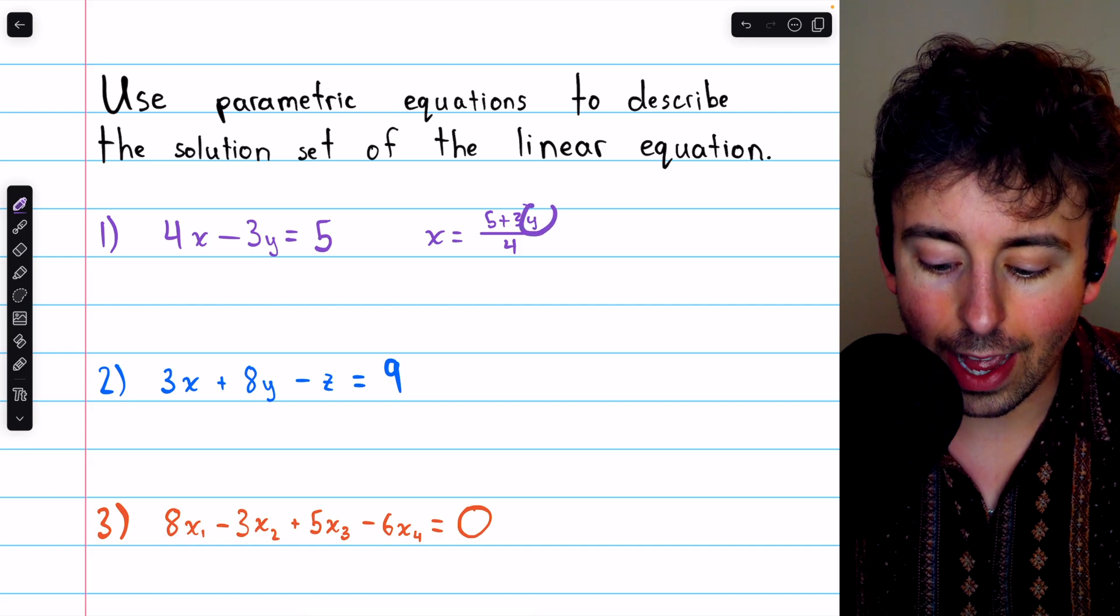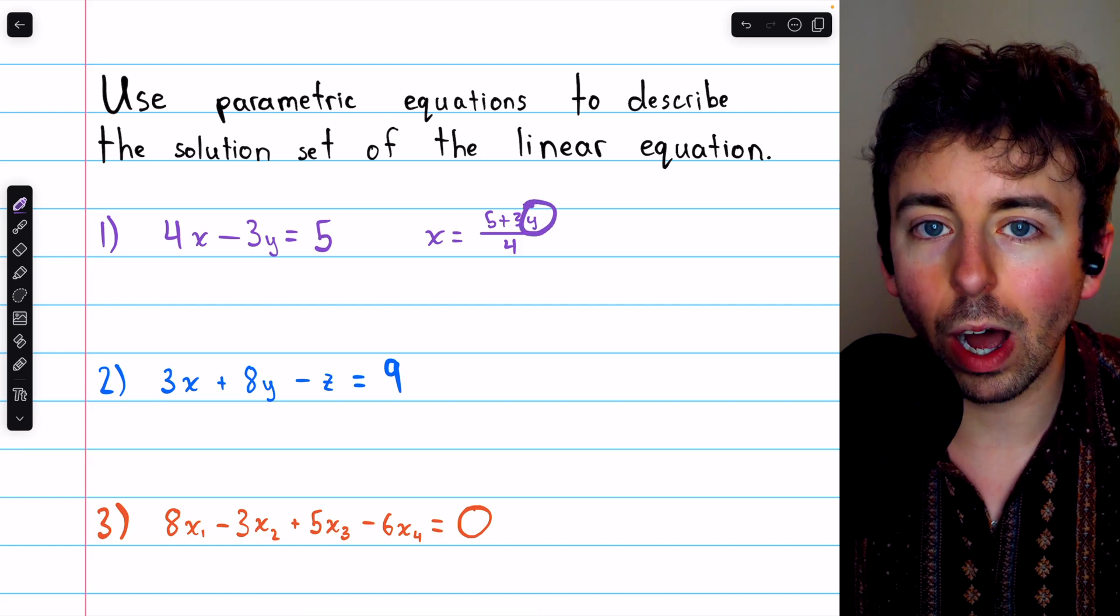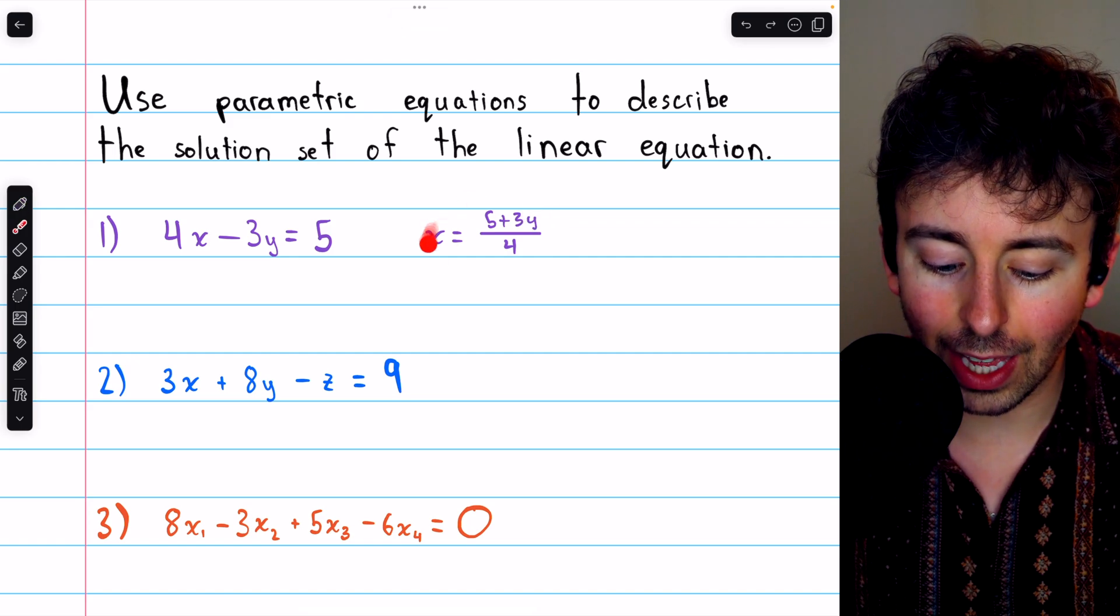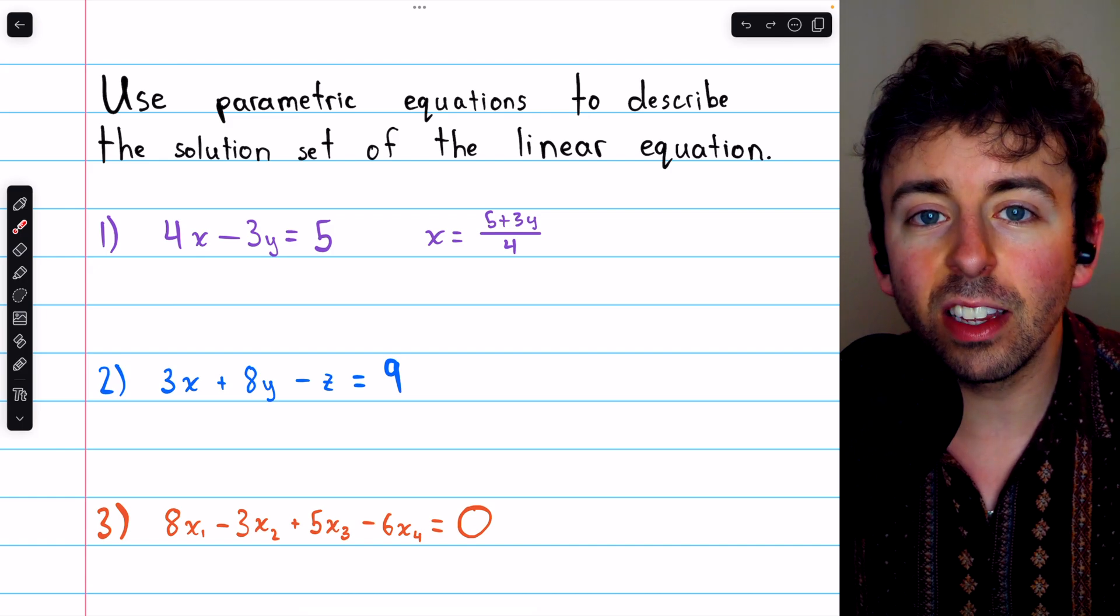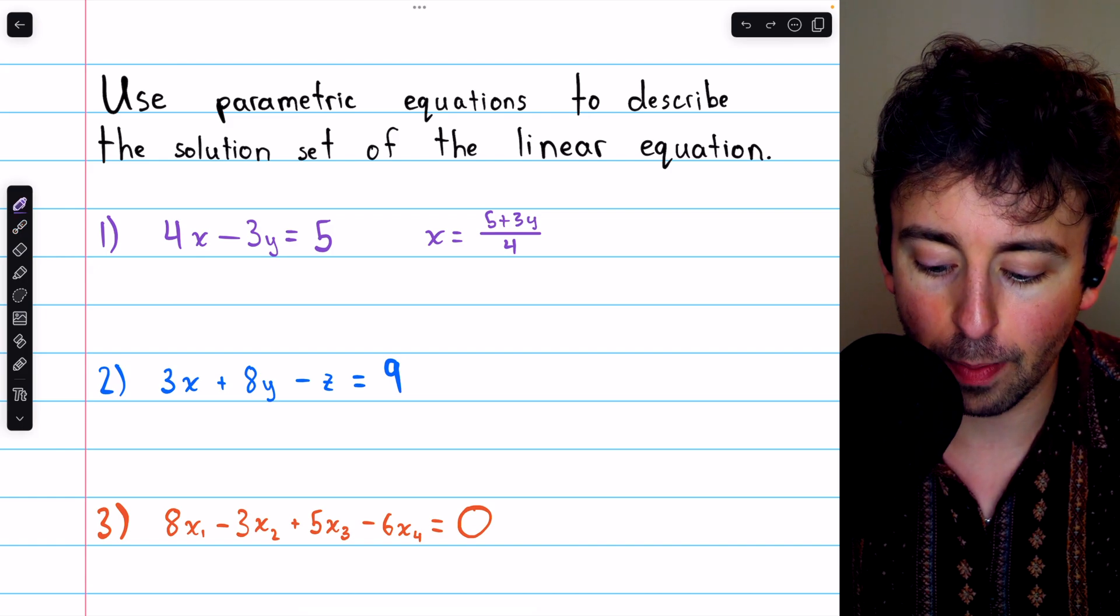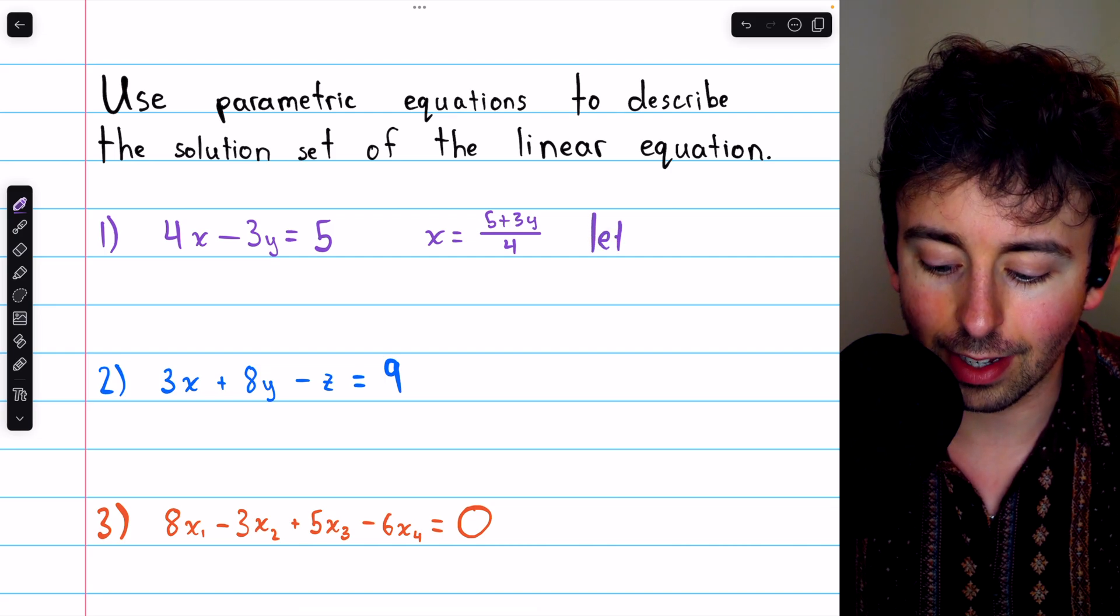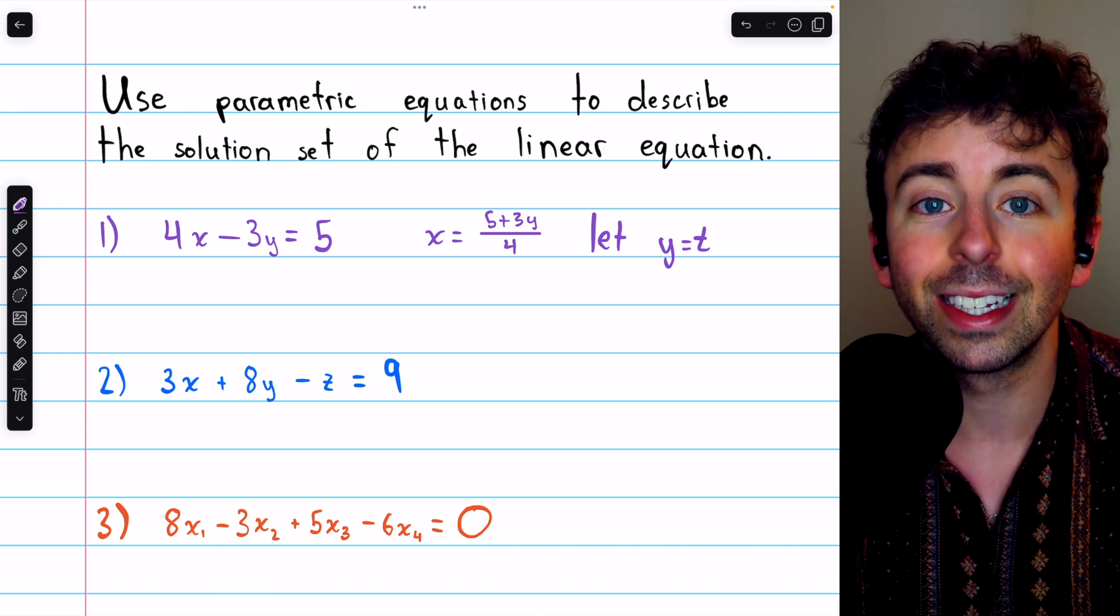Now, we see that y is what we would call a free variable. It doesn't matter what y equals. We can calculate x accordingly to have a solution to this equation. Since y is a free variable, we'll assign it to an arbitrary parameter. A common choice is t. So we'll say let y equal this arbitrary parameter t.